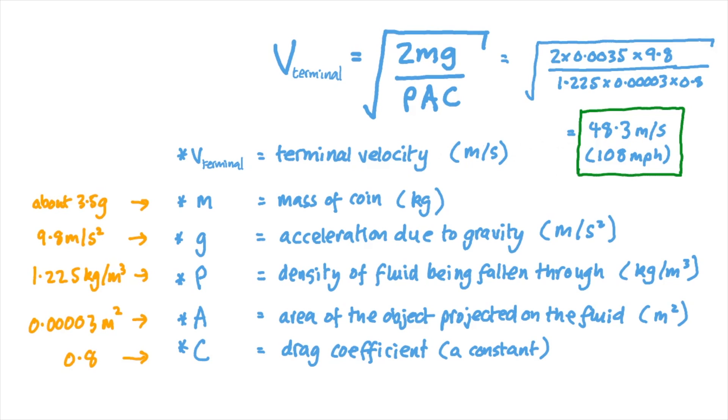Now using my assumptions about the coin falling sideways, so projecting a very small area, a drag coefficient again of 0.8 and a mass of 3.5 grams, we get that the terminal velocity is equal to 48.3 meters per second—that's about 108 miles per hour.